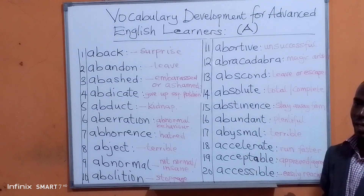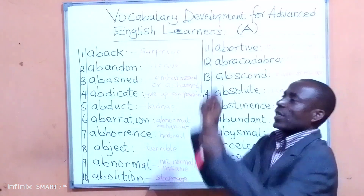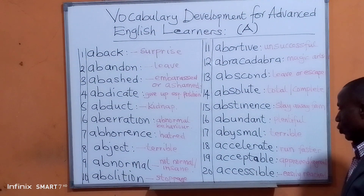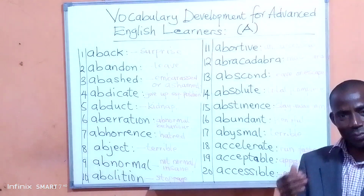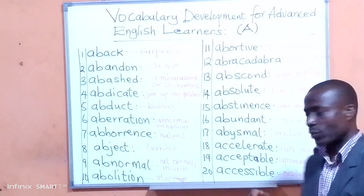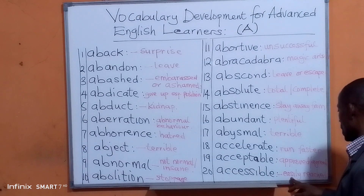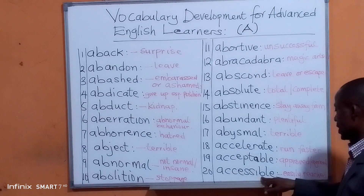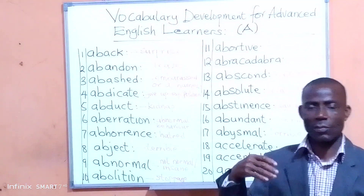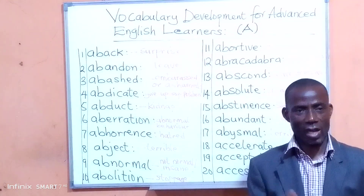Accelerate means to move fast — like a car moving slowly and after some time moving faster. Accelerate means to move faster. Acceptable means approved or agreed. For example: 'This is acceptable behavior in our society. In this place, we will encourage acceptable behavior.' Accessible means easily reached. For example: 'Accessible road. The man is accessible. We want accessible water. The school should be accessible' — meaning you can easily reach there or get to it.